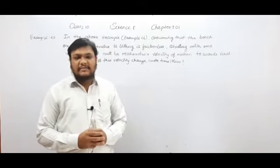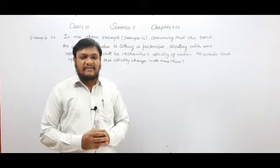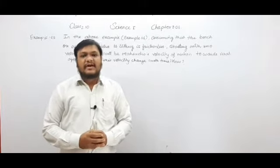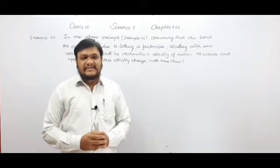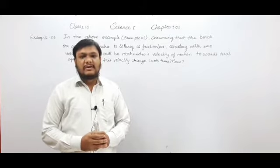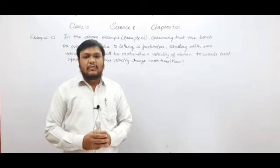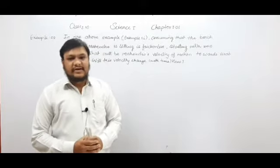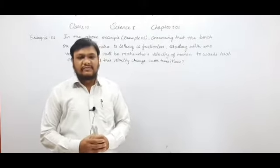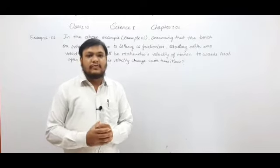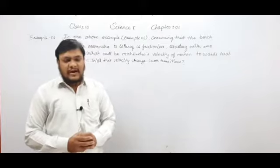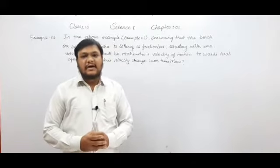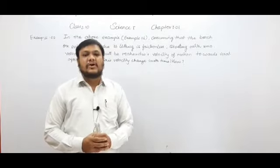We used the formula from the previous lecture: gravitational force F is equal to G multiplied by M1 multiplied by M2 divided by R square. We substituted the values of masses and distance, and the gravitational force between Mahindra and Virat was calculated as 4.002 multiplied by 10 raised to power minus 7 Newton. We can calculate the velocity and acceleration using Newton's equations and laws of motion.